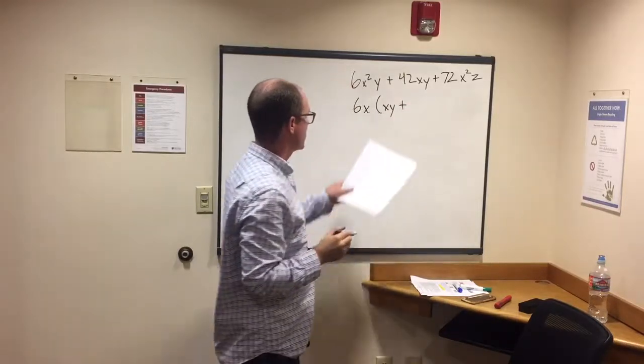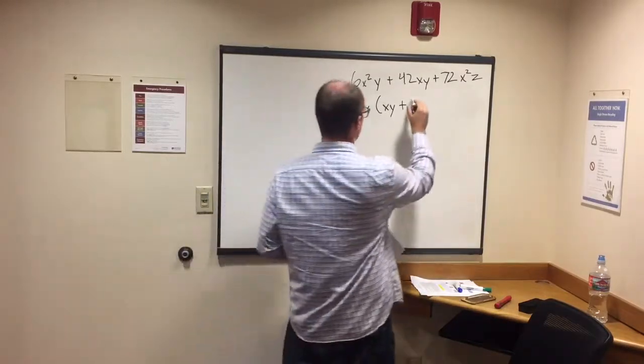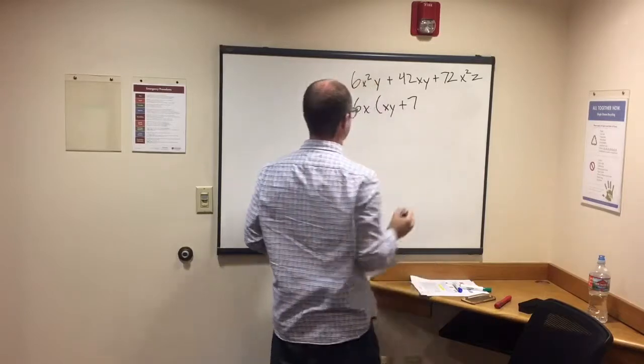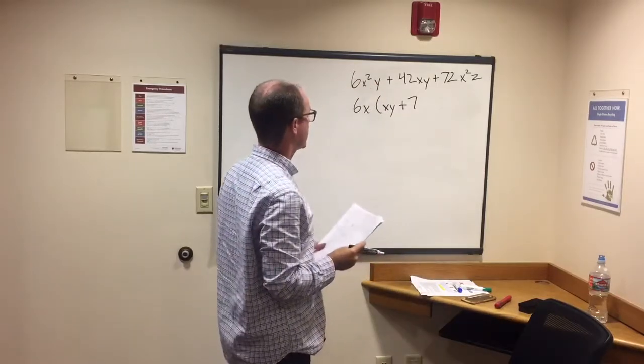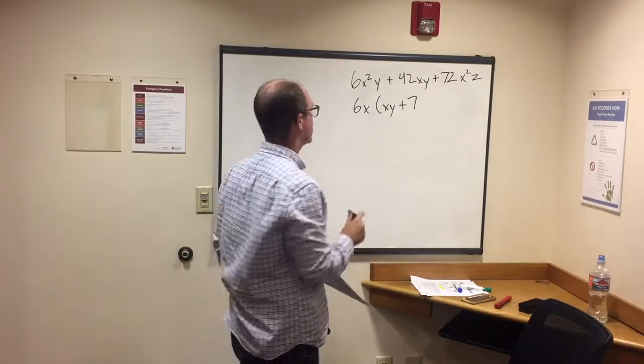Plus - we've got 42 up there, so we need to know that 6 times 7 is 42, so we start with a 7. The answer up here was 42xy - I've already got my x, but I need to